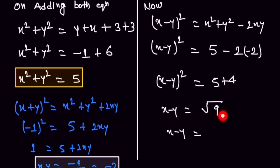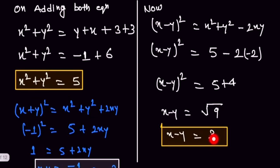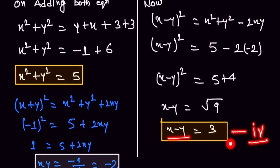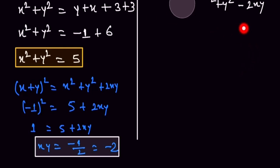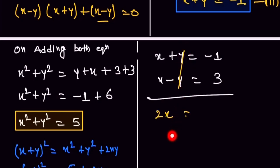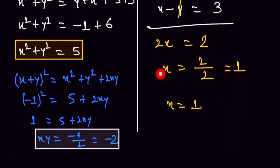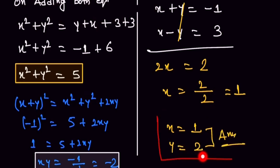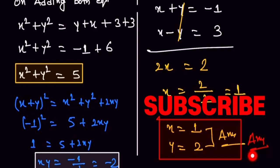So our system is: x plus y equals minus 1 (equation 3) and x minus y equals 3 (equation 4). Adding these equations, the y terms cancel and we get 2x equals 2, so x equals 1. Substituting back to find y, y equals minus 2. This is our answer. Thank you so much for watching — if you liked the video, please subscribe to our channel and share it.